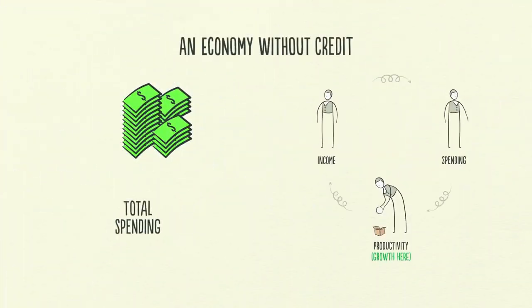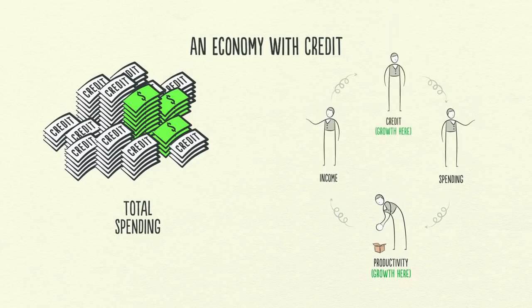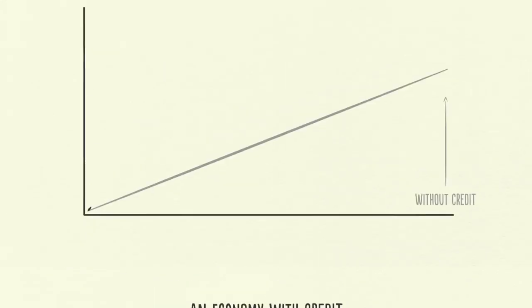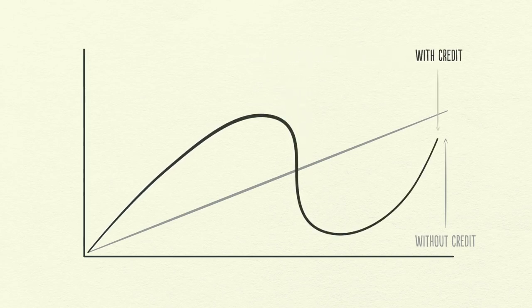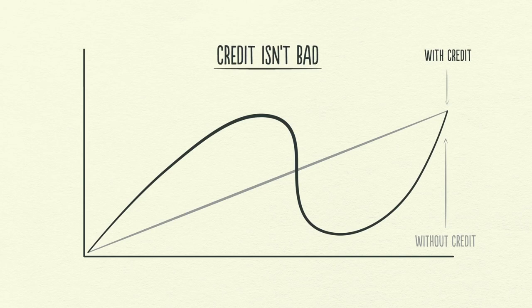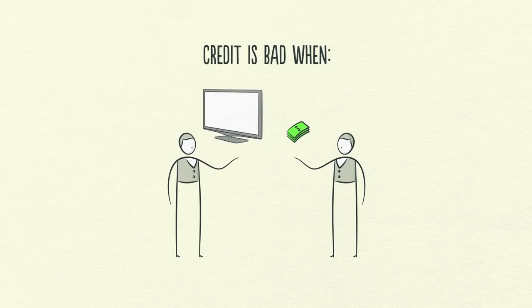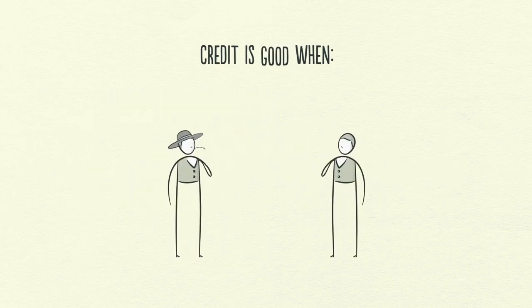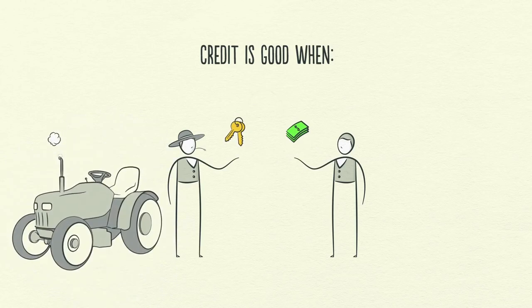Remember, in an economy without credit, the only way to increase your spending is to produce more. But in an economy with credit, you can also increase your spending by borrowing. As a result, an economy with credit has more spending and allows incomes to rise faster than productivity over the short run, but not over the long run. Now, don't get me wrong. Credit isn't necessarily something bad that just causes cycles. It's bad when it finances overconsumption that can't be paid back. However, it's good when it efficiently allocates resources and produces income so you can pay back the debt.